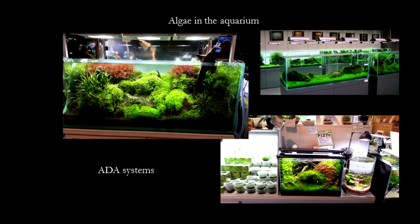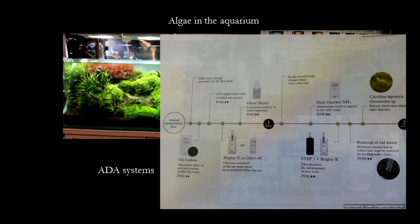One system that is popular in Asia with many examples is the ADA system. It's nice to study because it is a very standardized set of equipment in terms of lighting, tank dimensions, even filter in and out flows, as well as substrate and fertilization system. So almost every ADA system has those same variables, and one can study them to see what the outcomes are.